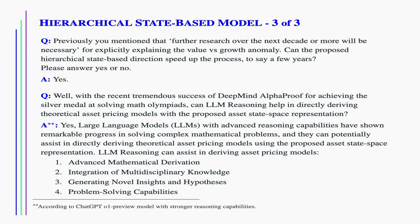Previously you mentioned that further research over the next decade or more will be necessary for explicitly explaining the value versus growth anomaly. Can the proposed hierarchical state-based directions speed up the process, to say a few years? Yes. With the recent tremendous success of DeepMind AlphaProof for achieving the silver medal at solving math olympiads, can LLM reasoning help in directly deriving theoretical asset pricing models with the proposed asset state-space representation? Yes. Large language models with advanced reasoning capabilities have shown remarkable progress in solving complex mathematical problems, and they can potentially assist in directly deriving theoretical asset pricing models using the proposed asset state-space representation. LLM reasoning can assist in deriving asset pricing models through: advanced mathematical derivation, integration of multidisciplinary knowledge, generating novel insights and hypotheses, and problem-solving capabilities.